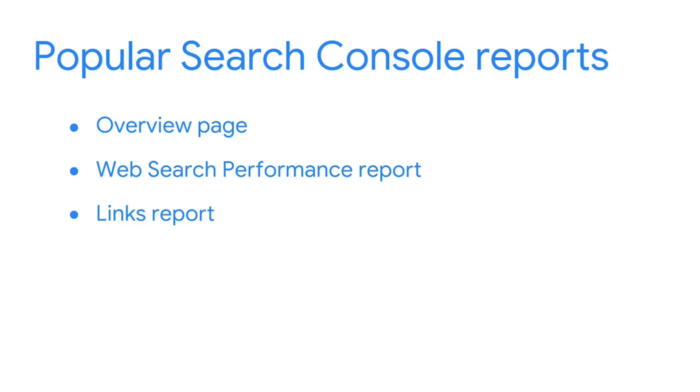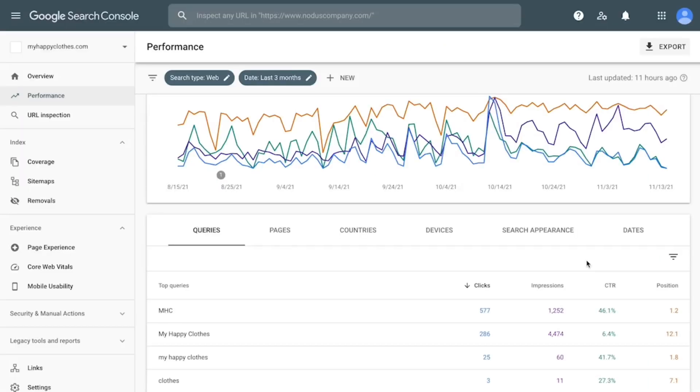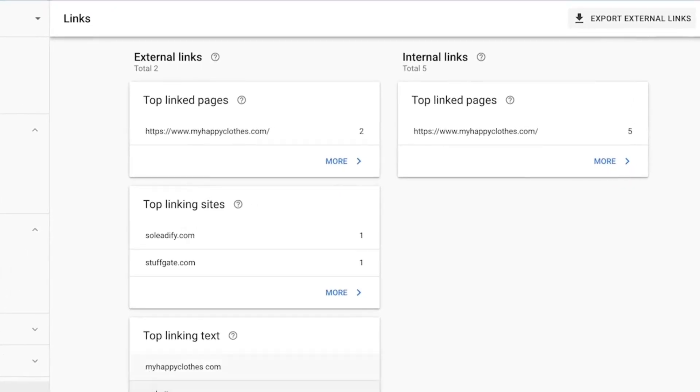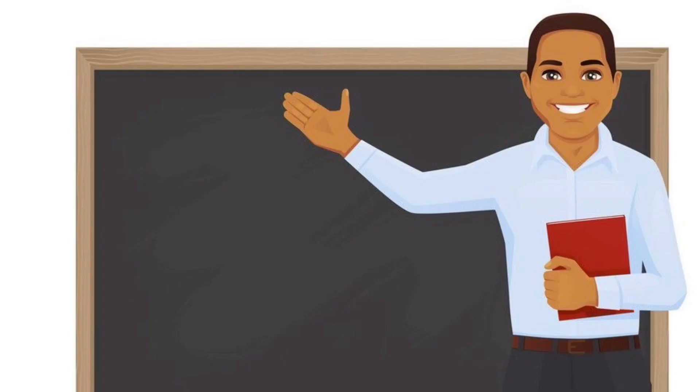Another report to review is the links report. This shows which websites link to yours, what the link text is, and what your top linked pages are. Use this report to better understand which web pages are receiving the most links from other websites. Ask yourself, why is this page receiving more links than other pages?